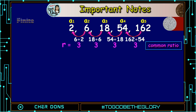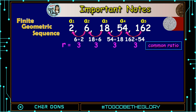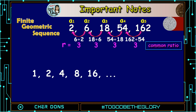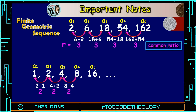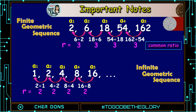The given sequence is called a finite geometric sequence because the last term is given. Now I have another sequence: 1, 2, 4, 8, 16, and so on. The common ratio is 2, since 2÷1=2, 4÷2=2, 8÷4=2, and 16÷8=2. This is called an infinite geometric sequence because of the three dots — ellipses — implying that the terms continue endlessly.